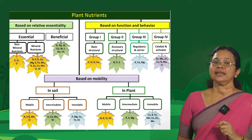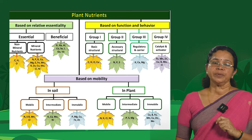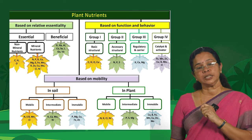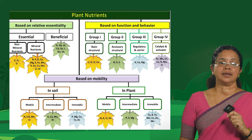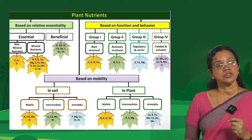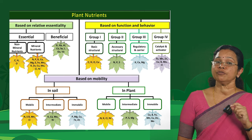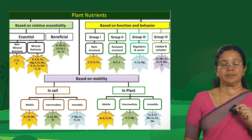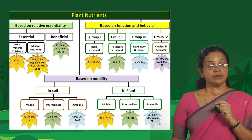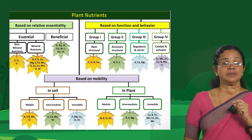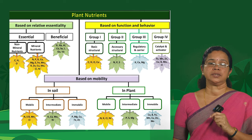The second category is the beneficial nutrients. These do not come under the purview of essential nutrients, but their presence proves to be beneficial for the plants. They include cobalt, sodium, vanadium and silicon — all considered as beneficial elements.